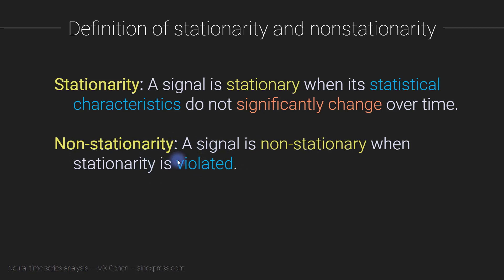A signal is non-stationary when stationarity is violated. Now, is this definition purely unambiguous and easily interpretable? The answer is no. I encourage you to pause the video and think about what the ambiguities are in this definition — what makes it a little bit difficult or open to interpretation. Well, there are three sources of ambiguity in this definition.